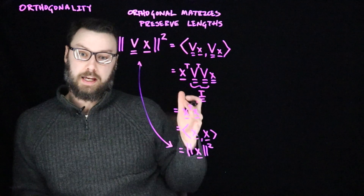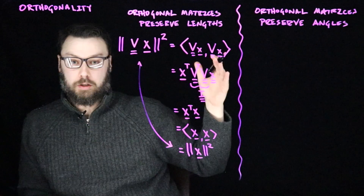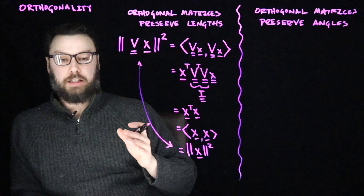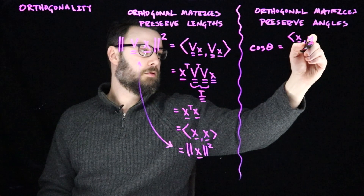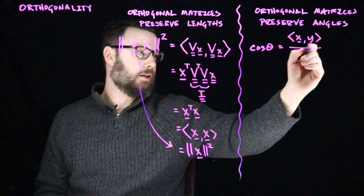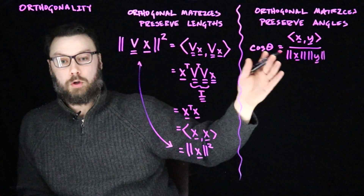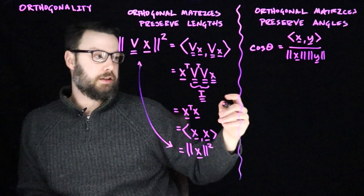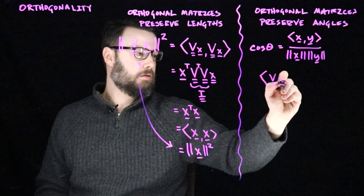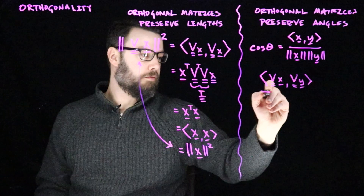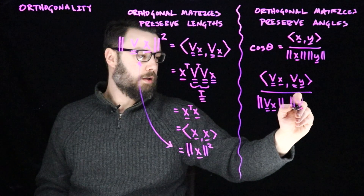Orthogonal matrices also preserve angles. Let's imagine we have some X and Y and want to talk about their angle, then talk about their angle again after hitting them with an orthogonal matrix V. We know that cosine theta equals the inner product of X and Y divided by the product of the magnitudes of X and Y. Now let's imagine that we hit X and Y each with matrix V — we get the inner product of VX and VY divided by the norm of VX multiplied by the norm of VY.